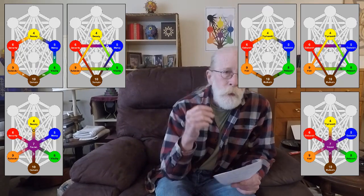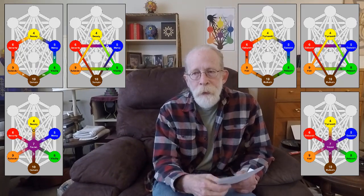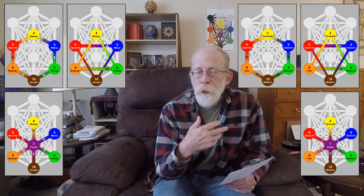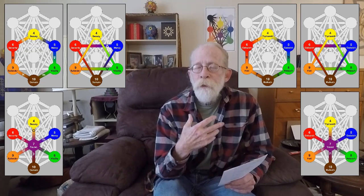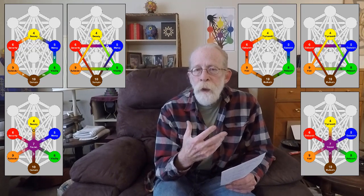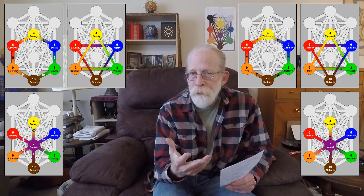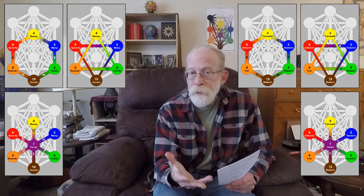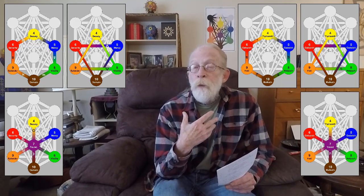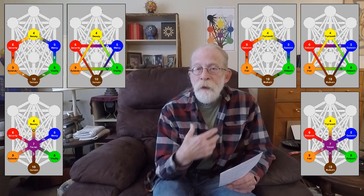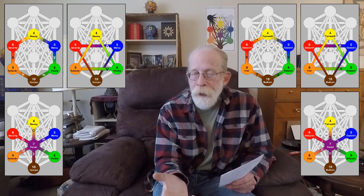Now it divides into three six-pointed forms. Two of them are composed of six sephirot and six paths, and one of them is composed of seven sephirot and six paths.